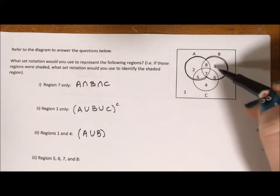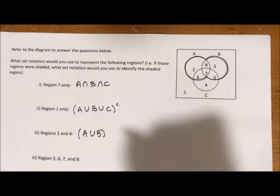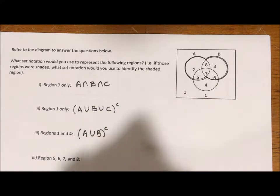A union B is going to kind of be this goggle like looking thing and I'm going to say I want the complement of that.